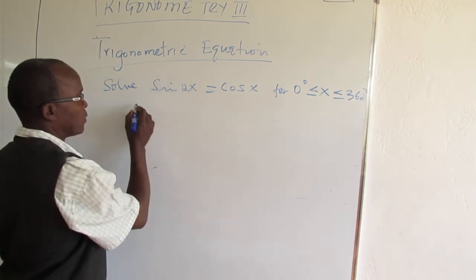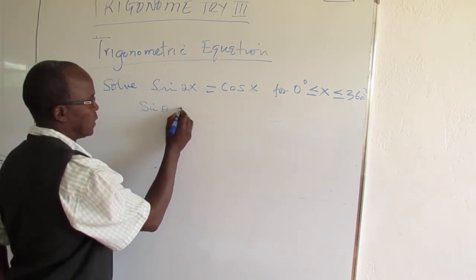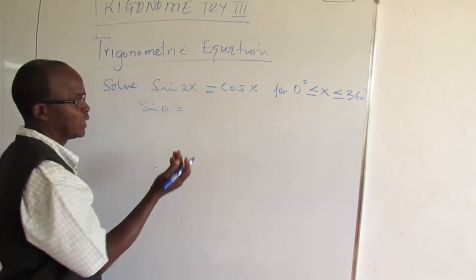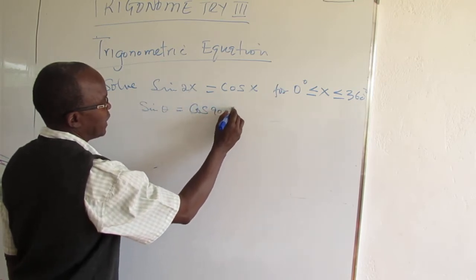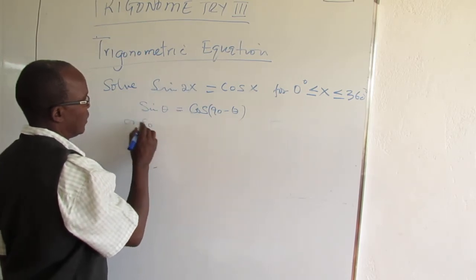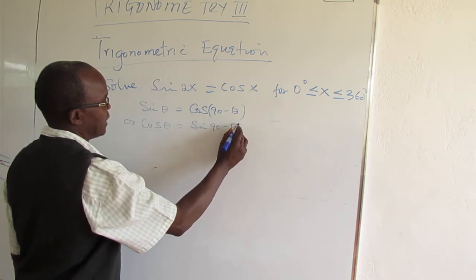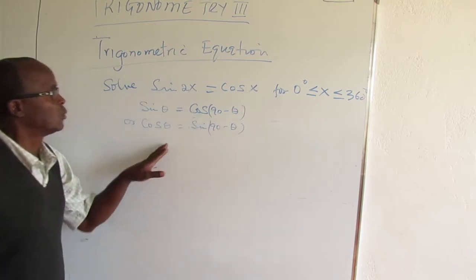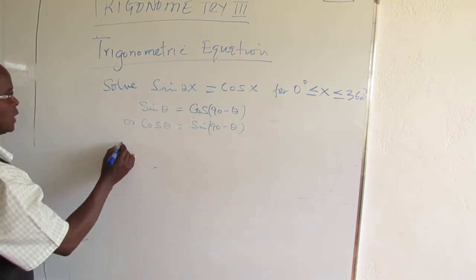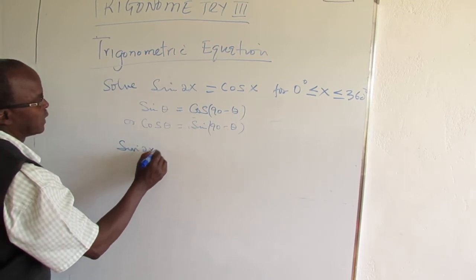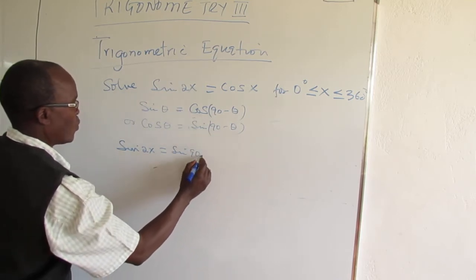We want to use the idea that when you have sin theta, since it's an acute angle, it will be cos 90 minus theta. Or cos theta should be sin 90 minus theta. So we want to rewrite cos in terms of sin, so we can say sin 2x is equal to sin 90 minus x.